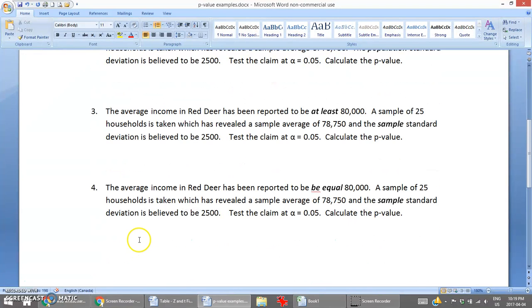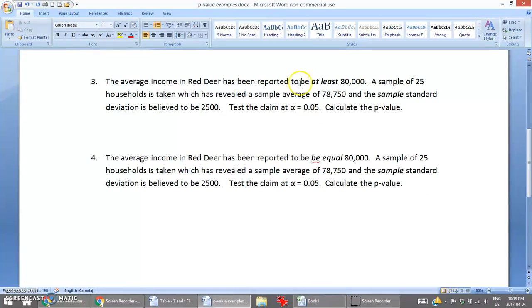The data stays the same for question three. Question three is a one-tail test because of this keyword at least, and instead of having a population standard deviation we have the sample standard deviation. Because we don't have the population standard deviation, we have to base our hypothesis test on t values. So the classical approach is using t values.